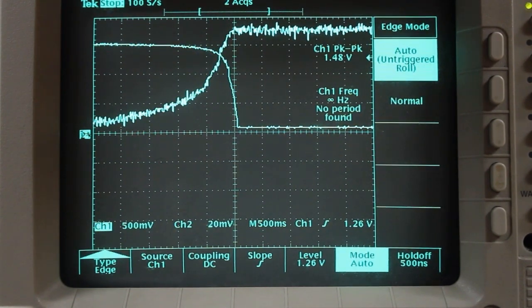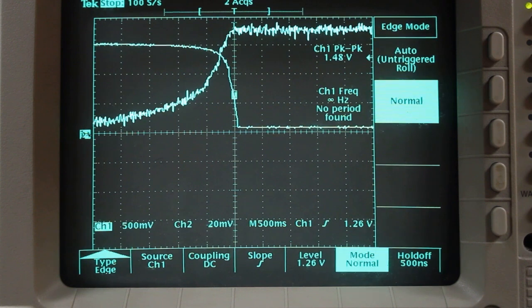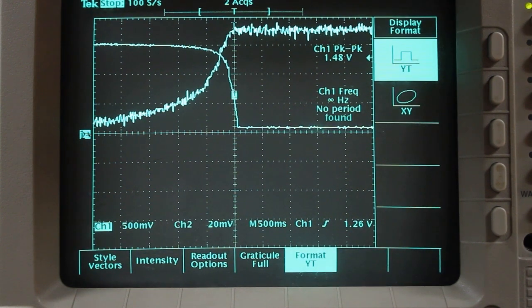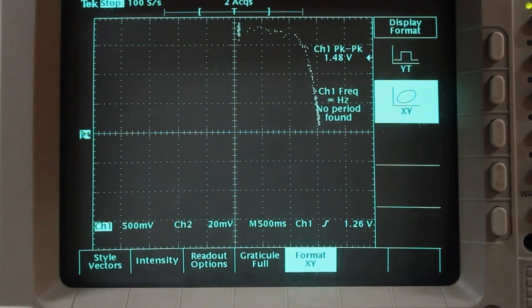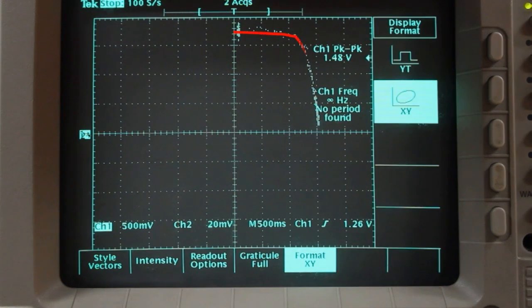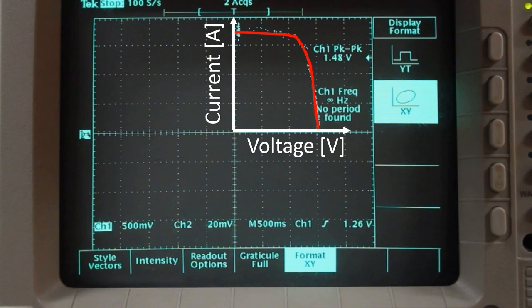The next thing to do is to change the format view of the curves. Go to the format menu and change it to XY. Finally, with this you can see the typical current-voltage curve of the solar cell.